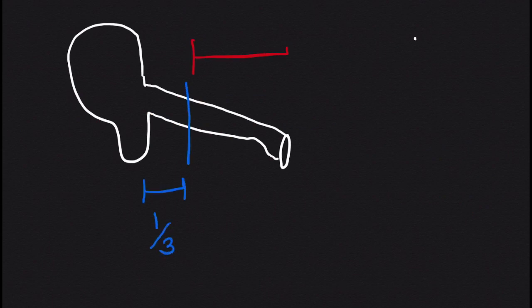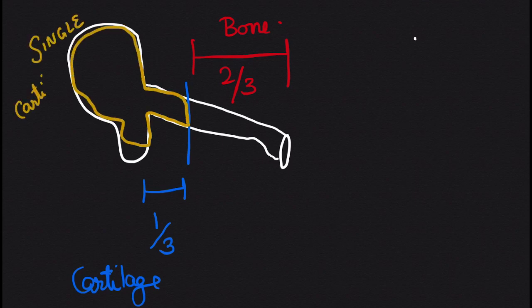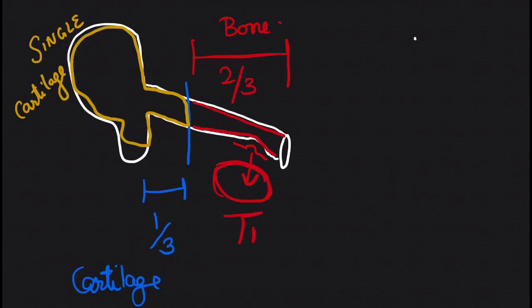The external auditory canal is divided into two parts: outer one-third and inner two-thirds. Total length is 24 millimeters. The outer one-third (8 mm) is the cartilaginous part, and the inner two-thirds (16 mm) is the bony part. The cartilaginous part is the same single cartilage that makes up the pinna.